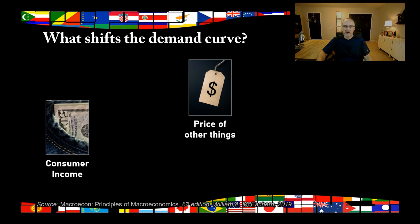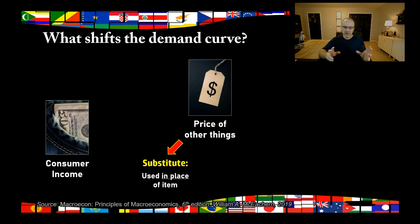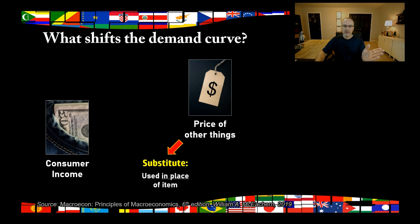Another thing that can shift the demand curve is the price of other things. There are two things to keep in mind: the price of substitute products — products that could be used in place of the one you're looking at. For example, a substitute for hot dogs would be a hamburger. So if hamburger prices dropped by half, you would expect the demand curve for hot dogs to shift to the right — more would be demanded at each price. I hope that makes sense.